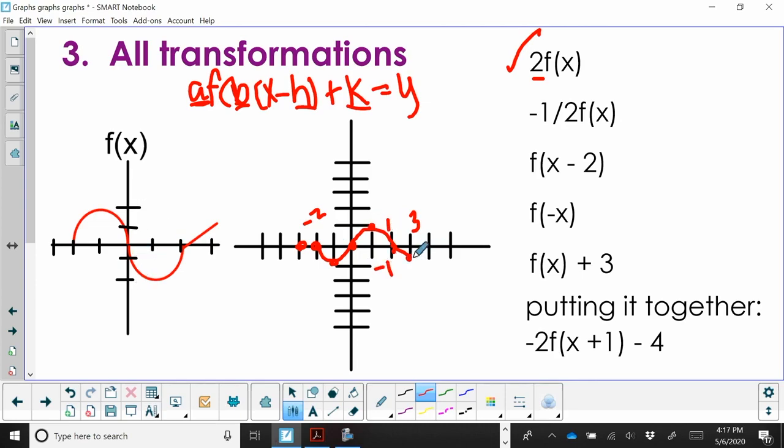And then this point right here, instead of ending at 3, 1, it's going to end up at 3, negative 1 half, because it's half the distance off the x-axis. So that's the second one where we have a shrink and a reflection.